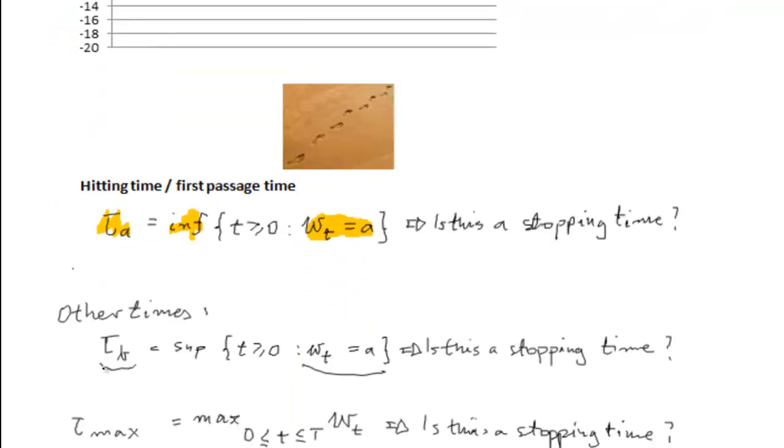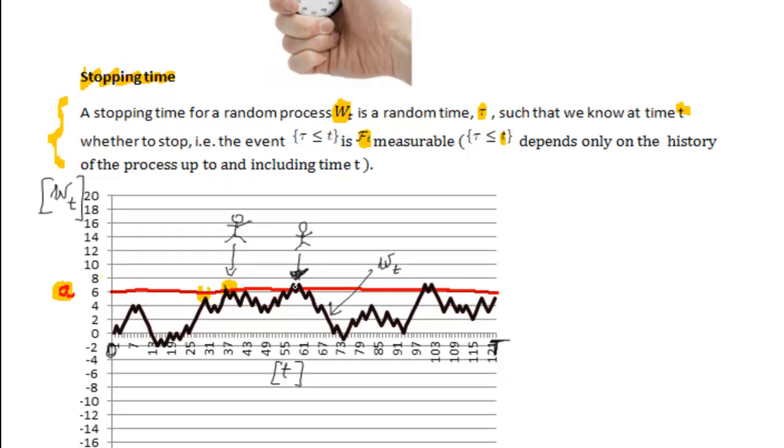Yet again, let's go back to the definition of tau B. It's the last time that this random process W hits A. If we stay here, we can't decide whether this is the last time we are going to hit the level A. Because it may happen that, you know, because we don't have the benefit of hindsight, we don't know what's going to happen in the future.